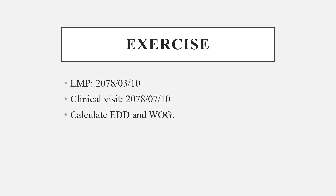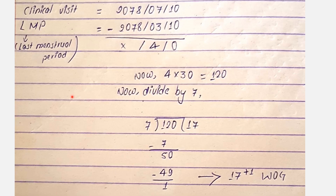Now we start the week of gestation calculation. Clinical visit is 2078-12-17. LMP is 2078-7-10. We subtract: in months, 12 minus 7 is 5. In days, 10 minus 10 is 0. So we have 5 months and 0 days.